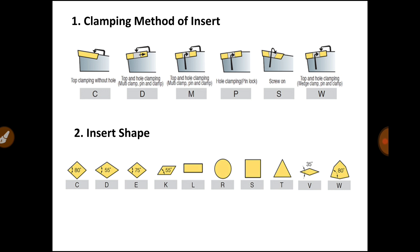The second location denotes the shape of the insert. Here on the screen you can see various shapes: rectangular, round, square, triangular, rhombic, and parallelogram. For round shape, letter R; for rectangular, letter L; for square, letter S; for triangular, letter T; for rhombic, letter V. There are various shapes of inserts available in the market.